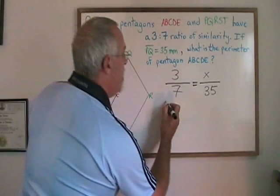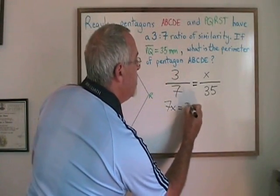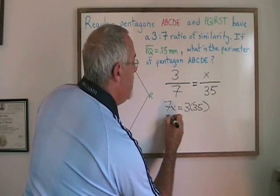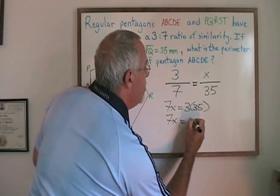Cross multiplying, I get 7X equals 3 times 35, 7X is equal to 105.